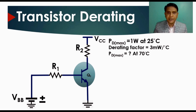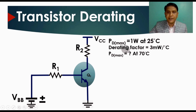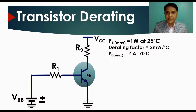In our design, PD_max equals 1 watt at 25°C. The derating factor is 3 milliwatt per degree centigrade, meaning that if temperature rises by 1°C, the power dissipation is reduced by 3 milliwatts. The derating factor describes how power dissipation diminishes as temperature rises.